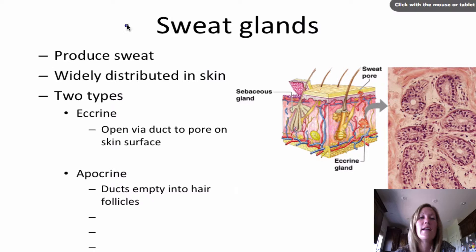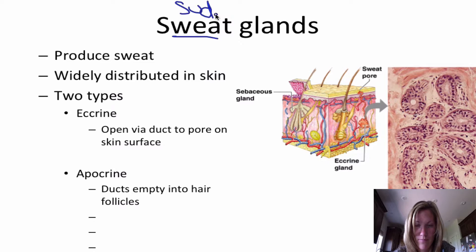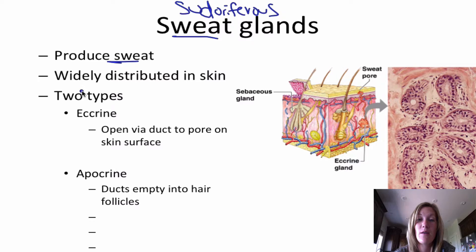Now let's move on to the sweat glands, also called sudoriferous glands. The purpose of sweat glands is to produce sweat, which is widely distributed within the skin. There are two types of sweat glands: the eccrine gland and the apocrine gland.